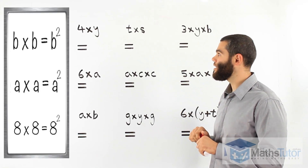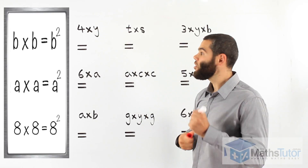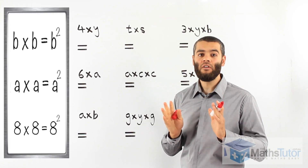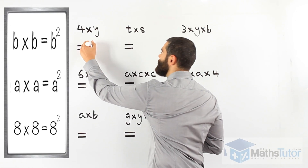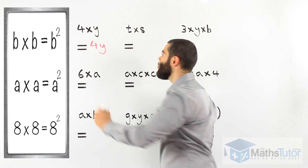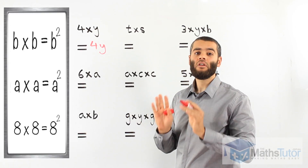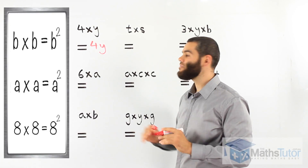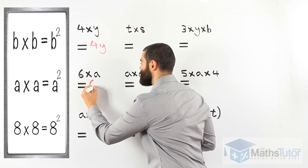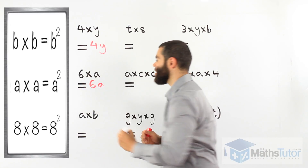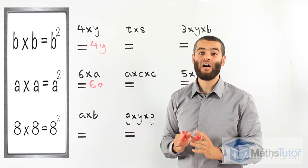Looking at this example: 4 times Y. The rule is we get rid of the multiplication sign. 4 times Y in algebra we write simply as 4Y. That's it — you just get rid of the multiplication sign. Next: 6 times A. Simple rule — we get rid of the multiplication sign. 6 times A is the same as 6A. So whenever you see 6A, you know straight away it means 6 times A.